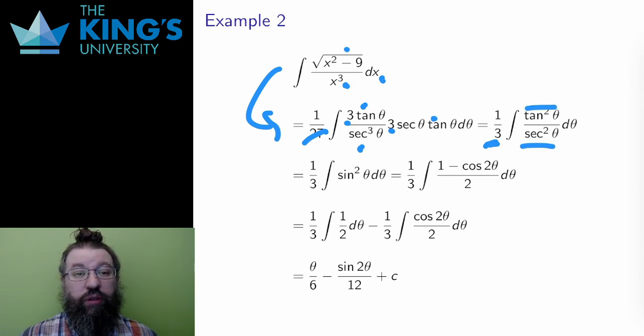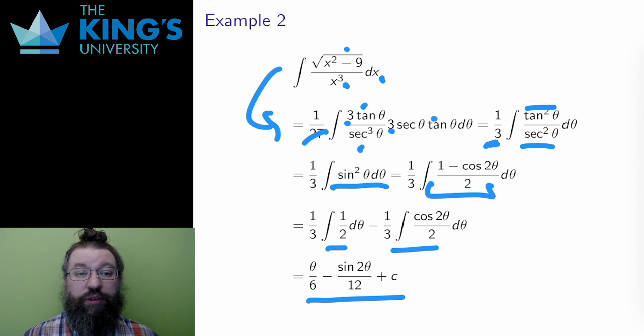This is a trig integral that is well treated by changing everything into sines and cosines. I get cancellations, leaving just sine squared, and then this is another half angle. Sine squared is 1 minus cos 2 theta over 2, and then I split this up into two integrals, both of which are doable. The result of the trig integral is theta over 6 minus sine 2 theta over 12 plus c.